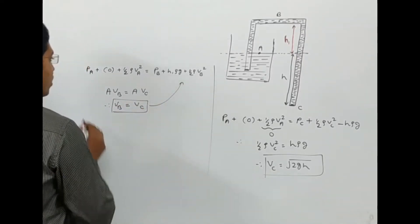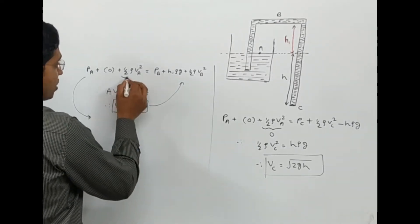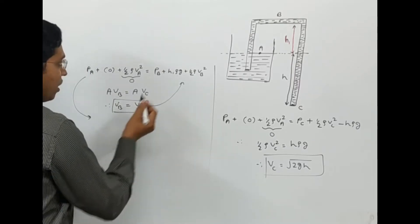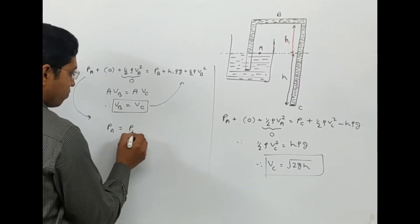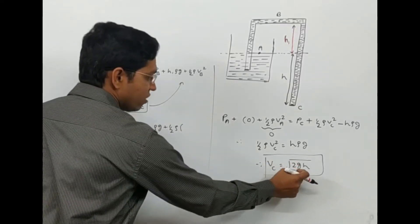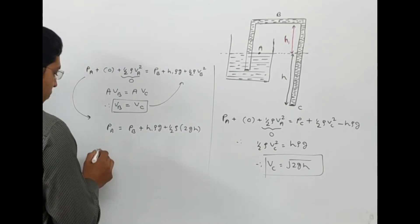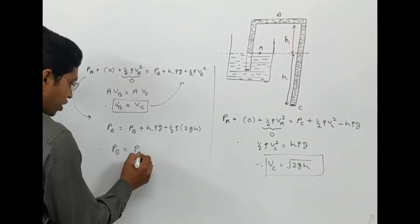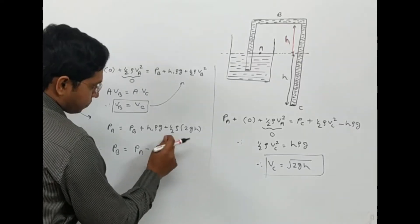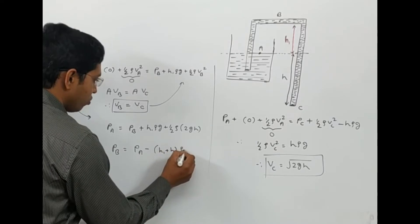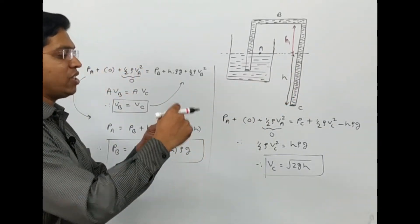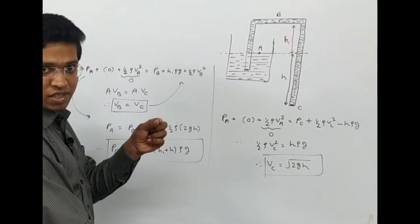Substituting VB equal to VC into the equation and noting that VA is approximately zero, we get: PA equals PB plus h1 rho g plus half rho times 2gh. This simplifies so that the pressure at B equals PA minus h1 plus h times rho g. So PB equals P-naught minus (h1 plus h) rho g.